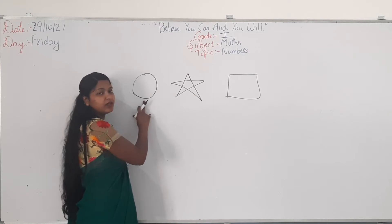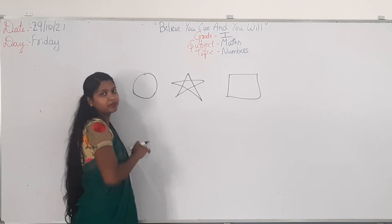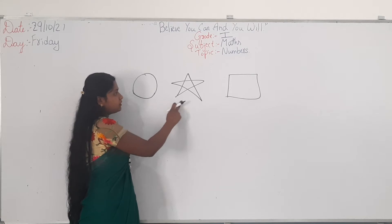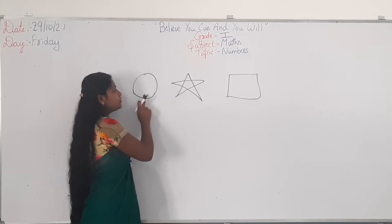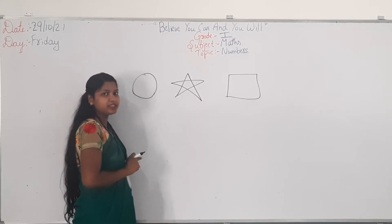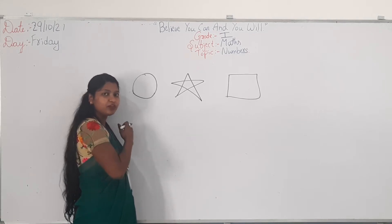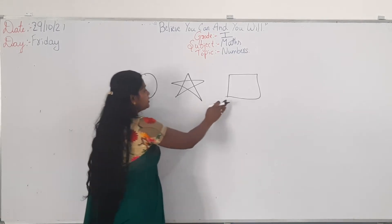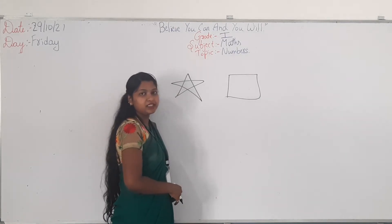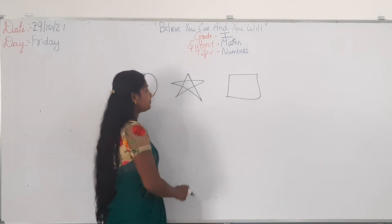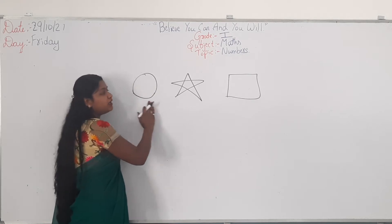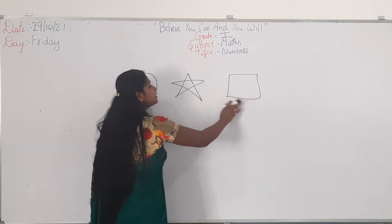Circle is before star. I am going to first circle, then star, then square. So, the circle is before star — it is coming before the star. And the square is after the star.